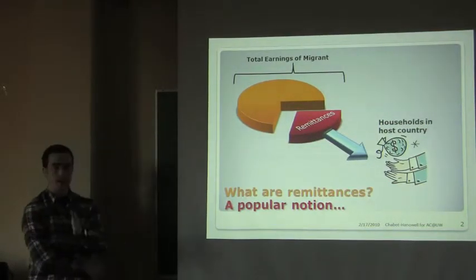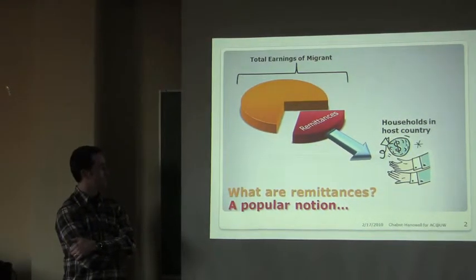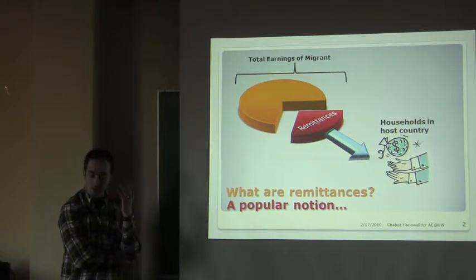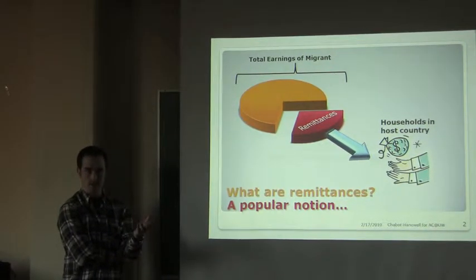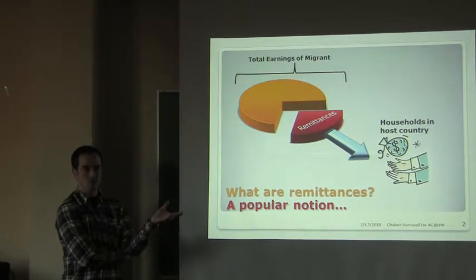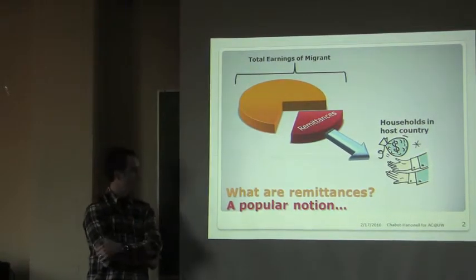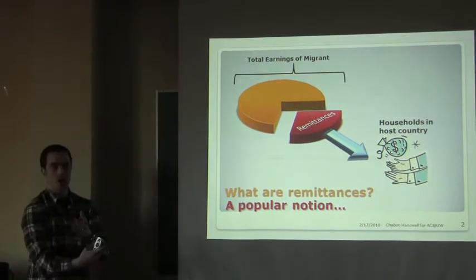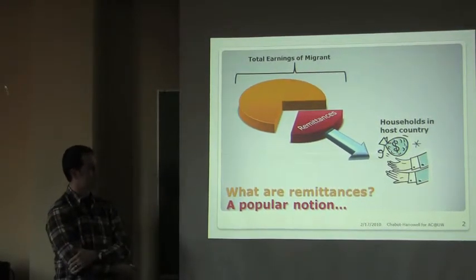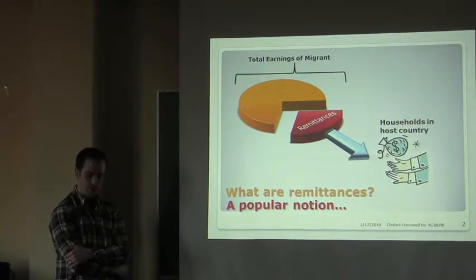So what are remittances? I already gave you a little anecdotal example of remittances, but in general there's a popular notion that they're a proportion of a migrant's earnings that they send back to households in the home country. These households are usually comprised of family and/or friends of a migrant. We'll talk about some problems with this model in a little bit, but this basic migration-related economic transaction is very important.